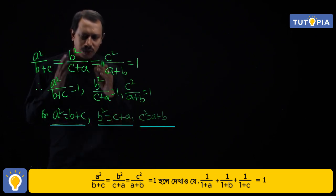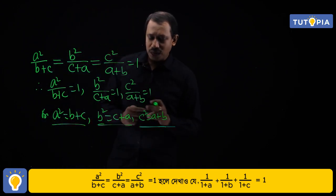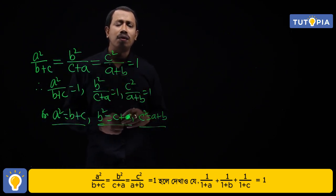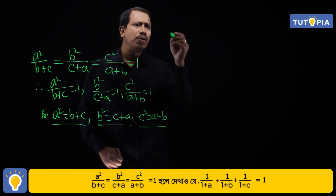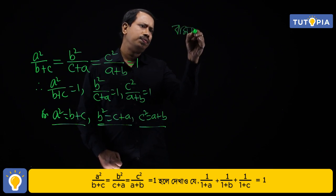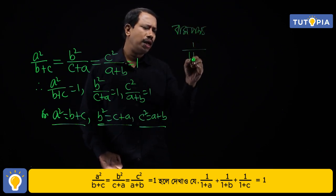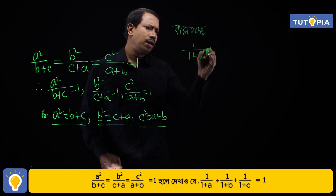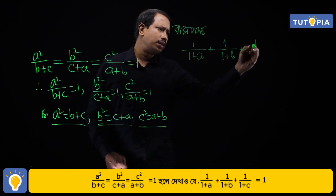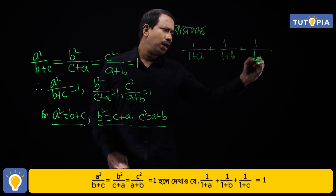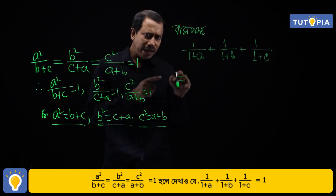So from the conditions we also get b² = c+a and c² = a+b. Now let's use these to evaluate the expression 1/(1+a) + 1/(1+b) + 1/(1+c).